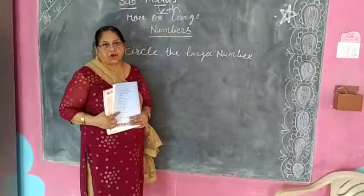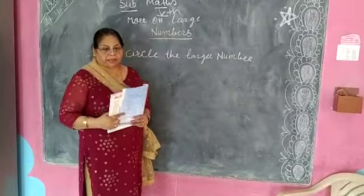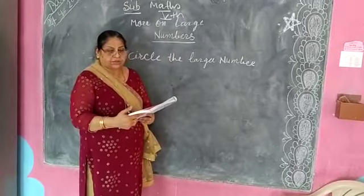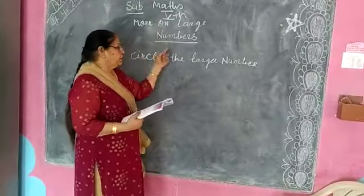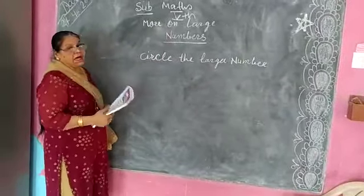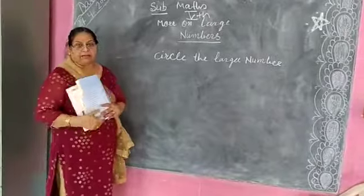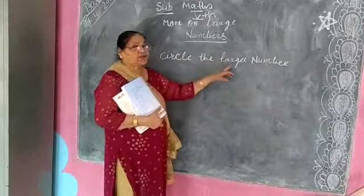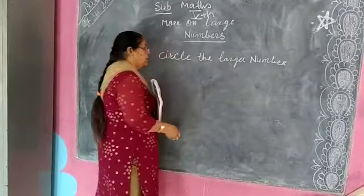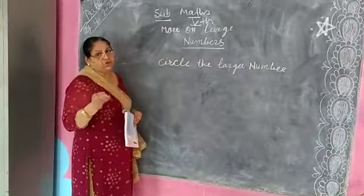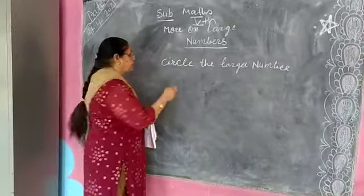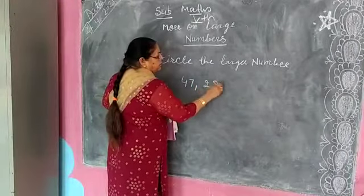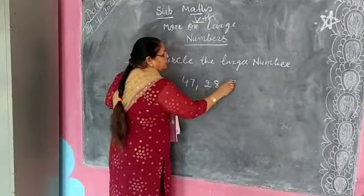Class subject math. Continue the math class chapter. First, more on large numbers. Circle the large number — circle the larger number. In last classes you have learned about 47, 28, and 32.